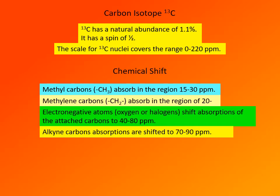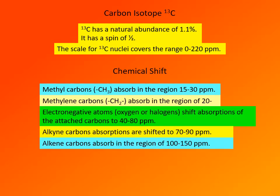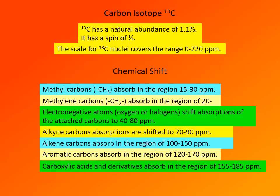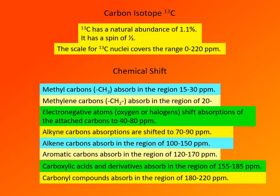Alkyne carbons absorb between 70 and 90 ppm. Alkene carbons are in the region of 150 ppm. Aromatic carbons have absorption between 120 and 170 ppm. Carboxylic acids and derivatives absorb in the region of between 155 and 185 ppm. And finally, carbonyl carbons absorb in the region of 180 and 220 ppm.